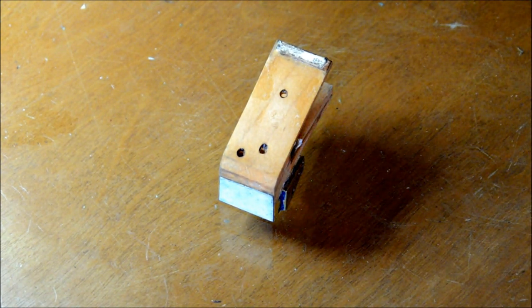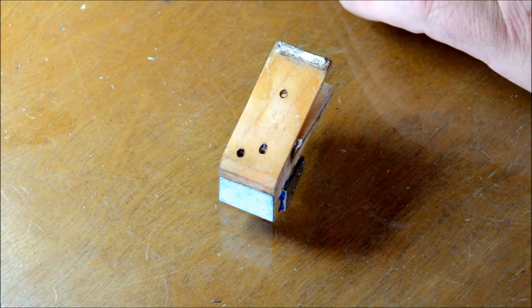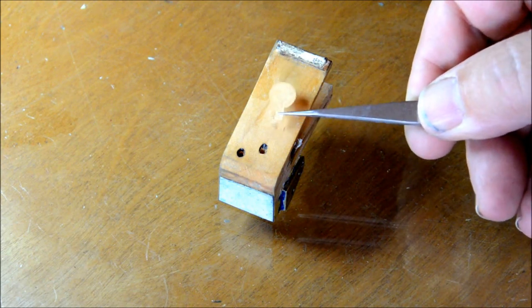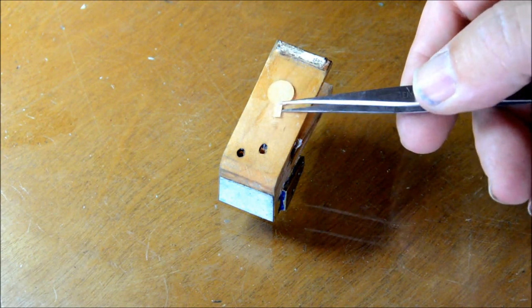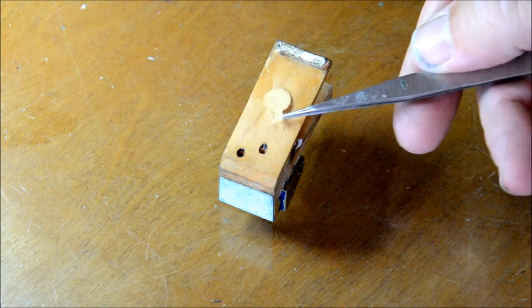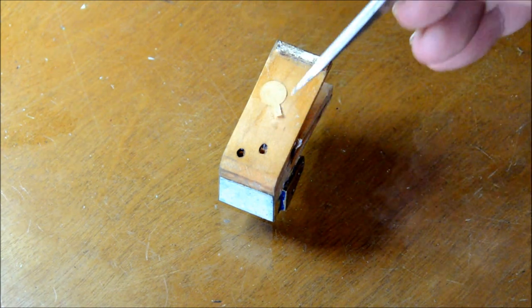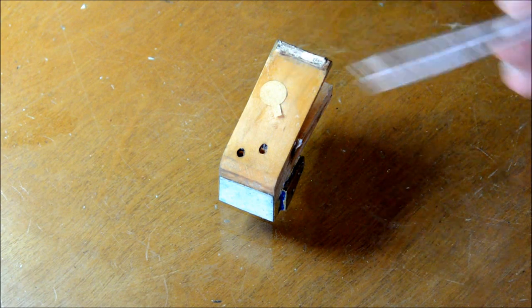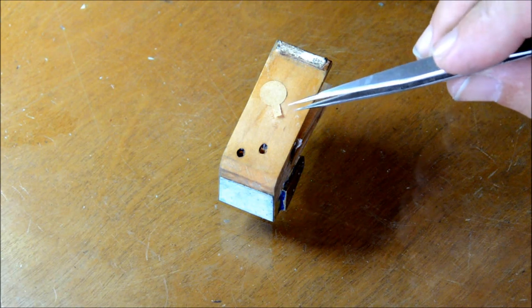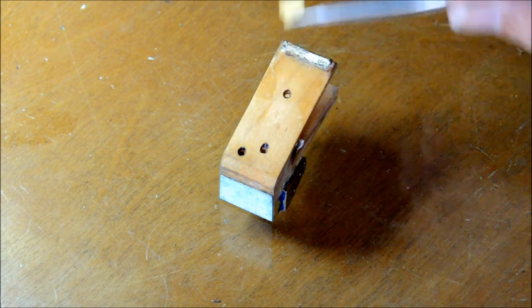So here we have the bellows body ready for replacing the valves. What I'd like to show you here is that this is what the original paper valve looks like. It basically covers the valve port, which is simply a hole, and it's glued at the little tab to the wooden body.